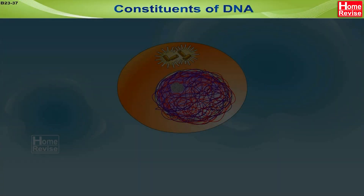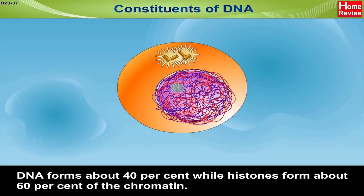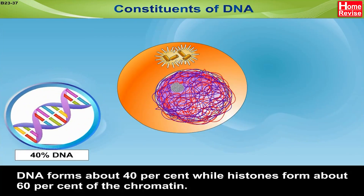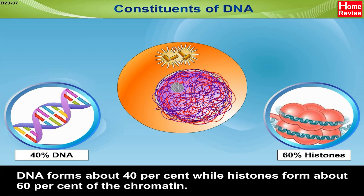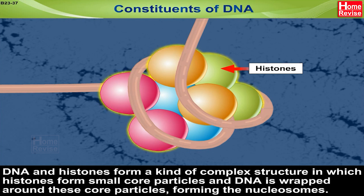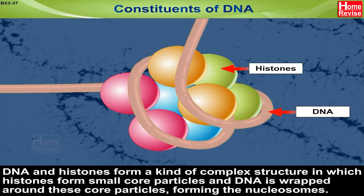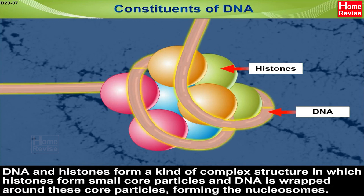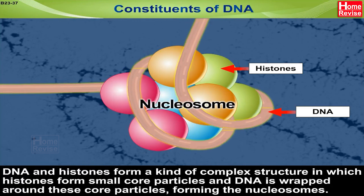Constituents of DNA: DNA forms about 40% while histones form about 60% of the chromatin. DNA and histones form a complex structure in which histones form small core particles and DNA is wrapped around these core particles, forming the nucleosomes.